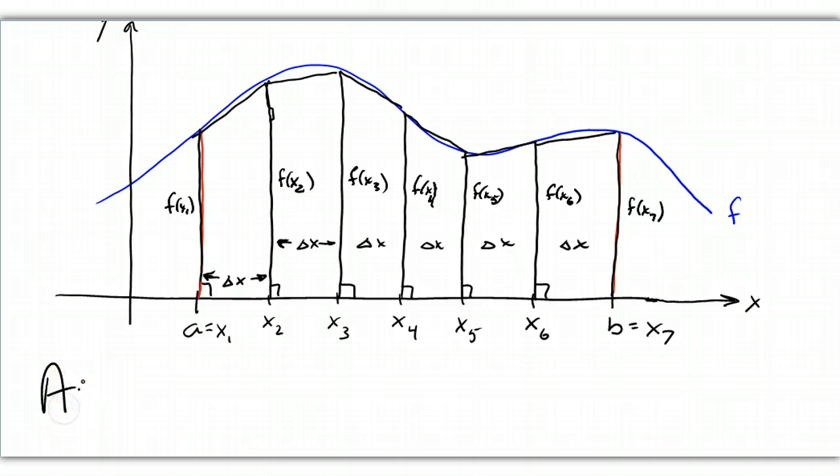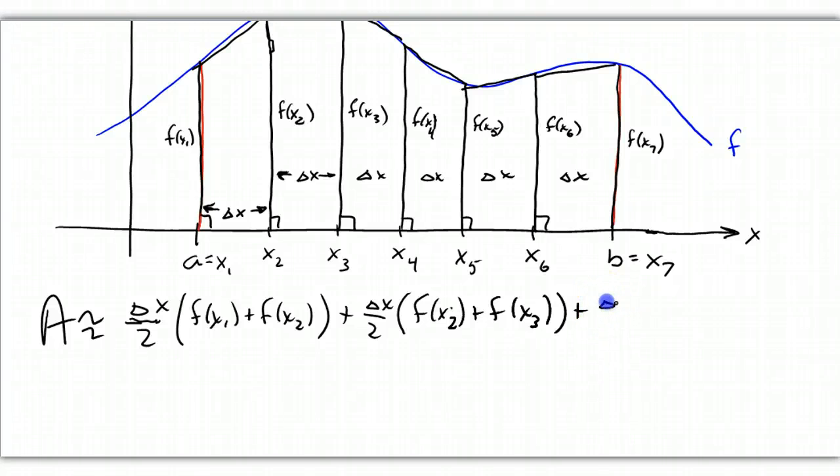So our area is going to be approximated by delta X over 2. And the first trapezoid is F of X1 plus F of X2. And the second trapezoid is going to be delta X over 2 times F of X2 plus F of X3, and the third trapezoid is delta X over 2. And that's going to be F of X3 plus F of X4.